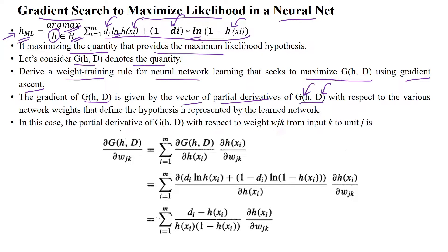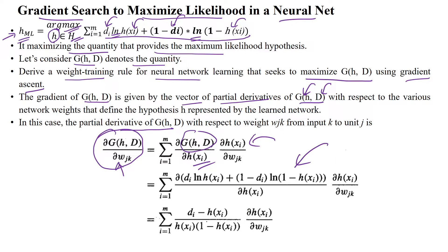When applying the partial derivative to this quantity g(h, D), we take the partial derivative with respect to weights w, because neural networks use weights. Applying this, we get the partial derivatives, and for g(h, D) we apply the loss function. From the loss function, we finally get: (actual output minus predicted output) divided by (predicted output times (1 minus predicted output)), multiplied with respect to weight.